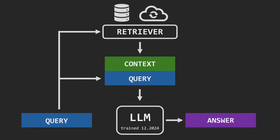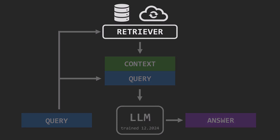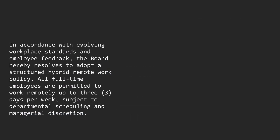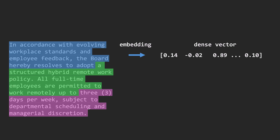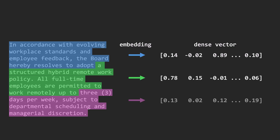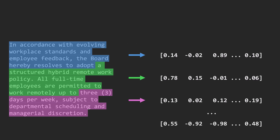One of the most fascinating aspects of RAG is that the retriever doesn't operate directly on text — it works with vectors. Suppose we have a document in our external database. It's first broken down into equal-length chunks, called passages, and each chunk is passed through an embedding model, which converts it into a dense vector — a series of numbers that capture the meaning of the text. This means phrases like 'up to three remote days' and 'three days of telework' would have similar vectors even though the wording differs. It also helps differentiate between Python the programming language and Python the snake.